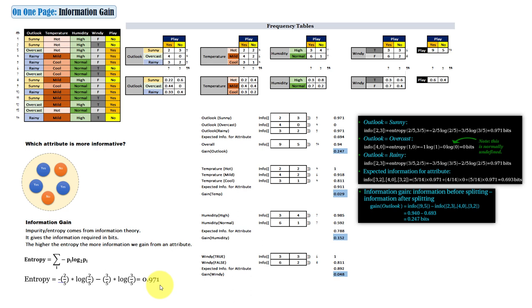This is the way we calculate entropy. Similarly, we can apply this formula to each and every attribute and then measure which attribute is the most important.